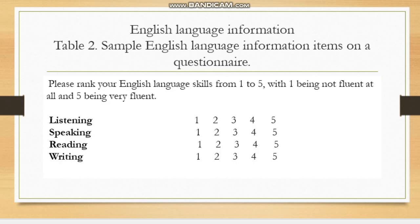This table includes an English language information questionnaire. As we all know, any language can be assessed through four skills: listening, speaking, reading, and writing. An example of such a test is IELTS. In this example, one means not being fluent at all, while five is scored as being very fluent in English.